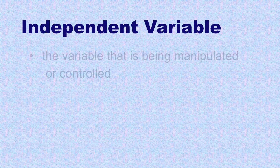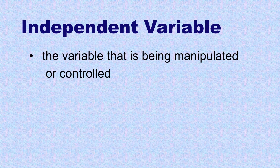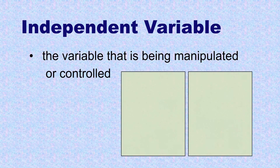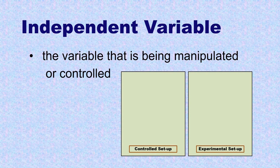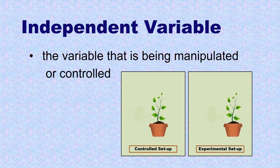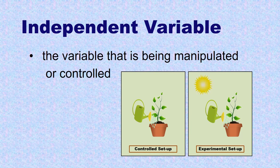Independent variable is the variable that is being manipulated or controlled. For example, in controlled and experimental setups, all variables are the same, except the presence of sunlight. The experimental setup is exposed to sunlight, while the controlled setup is not.